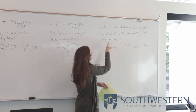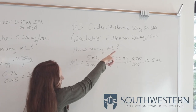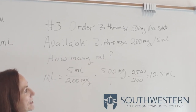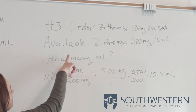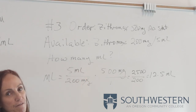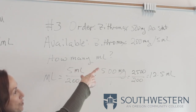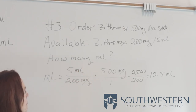The third problem: an order for Zithromax 500 milligrams PO stat — stat means now. What the pharmacist brought is Zithromax 200 milligrams per 5 milliliters, meaning for every 5 milliliters of solution there are 200 milligrams of Zithromax. So how many milliliters am I going to give?